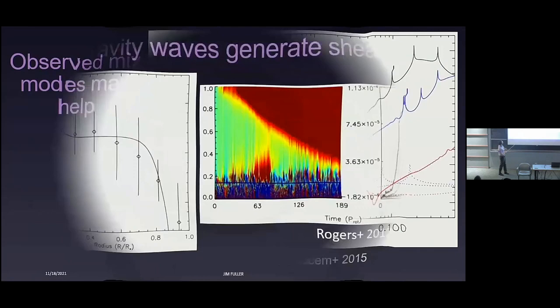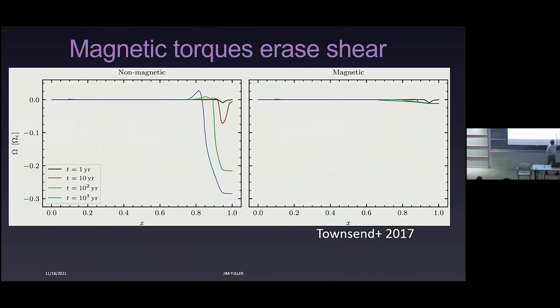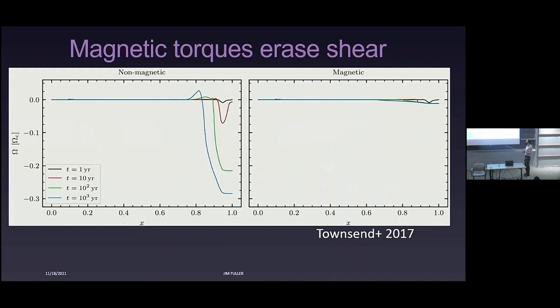If you start with rigid rotation, gravity waves can actually generate shear and create counter-rotating layers in stars, which might explain some of the weird slowly rotating main sequence stars we see. Tammy Rogers and Rich Townsend have worked on this. But if you also have magnetic torques operating simultaneously, those will try to restrict the amount of differential rotation generated by waves. So it's a complicated process where many mechanisms may interact with each other.